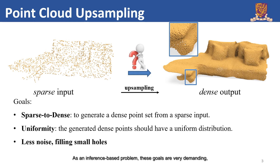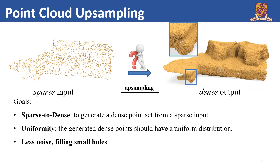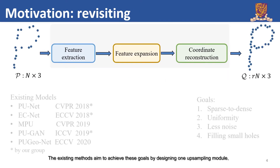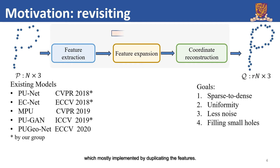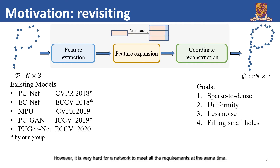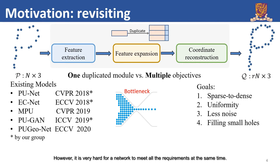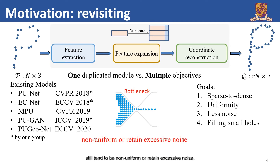As an inference-based problem, these goals are very demanding due to the limited information available in the sparse input. The existing methods aim to achieve these goals by designing one upsampling module, which is mostly implemented by duplicating the features. However, it is very hard for a network to meet all the requirements at the same time. Therefore, the dense points produced by existing works still tend to be non-uniform or retain excessive noise.